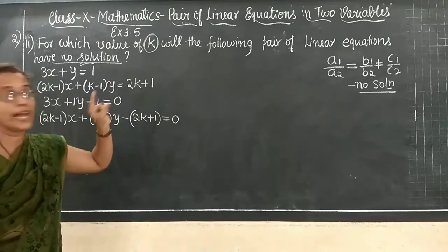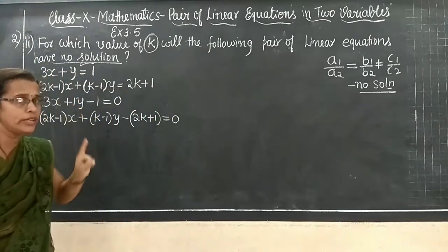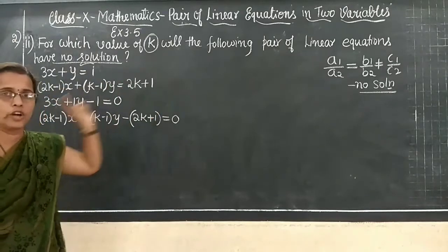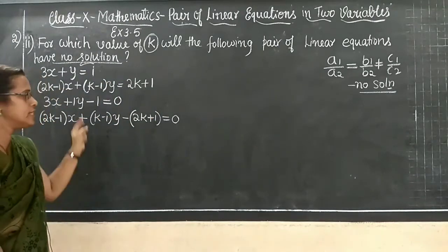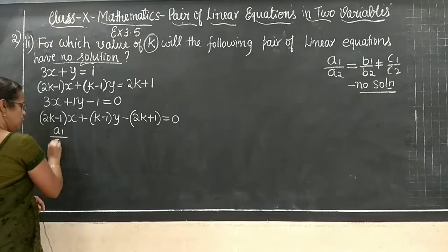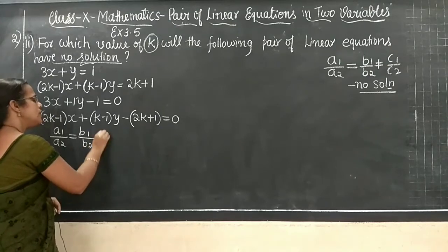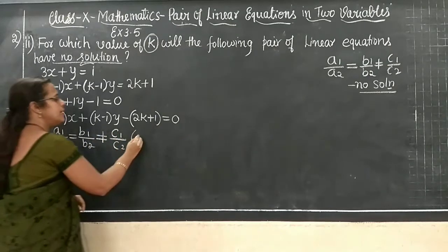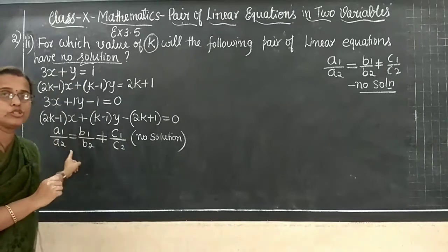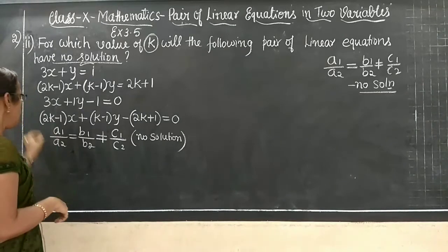Now we can find the ratios. A1/A2 = B1/B2 ≠ C1/C2 is the condition for no solution. No solution means the lines are parallel. Write that ratio now. Who is A1? It is 3. A2 is 2K − 1.